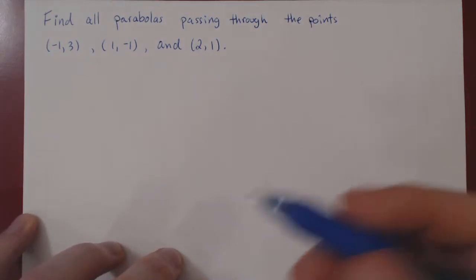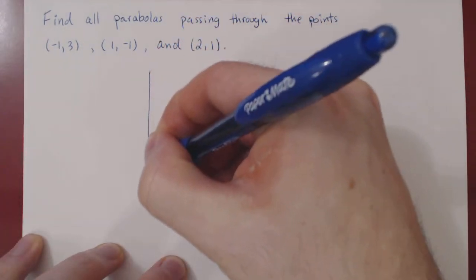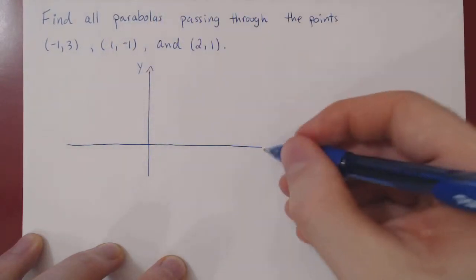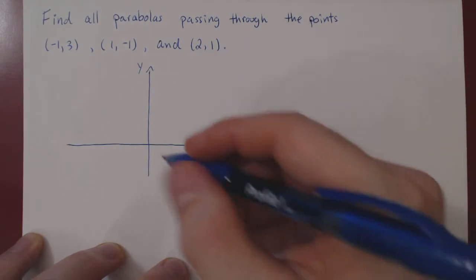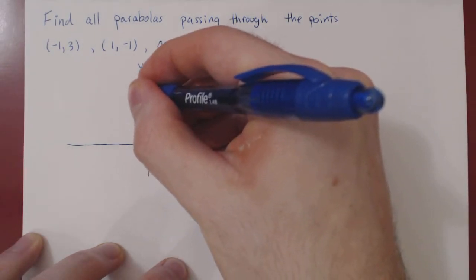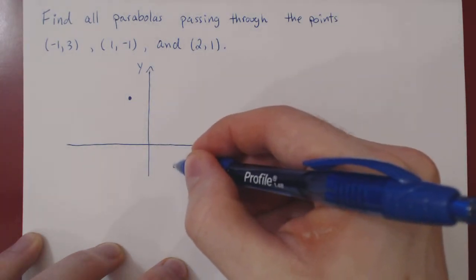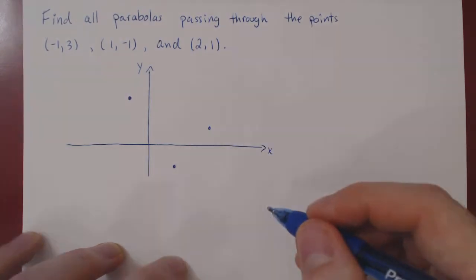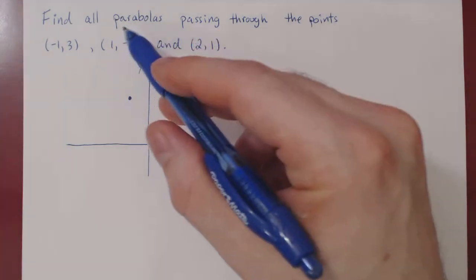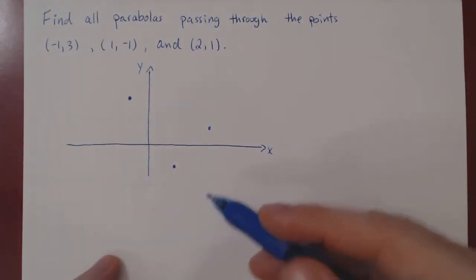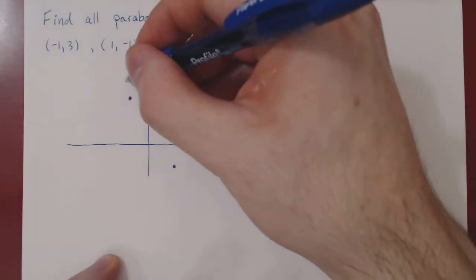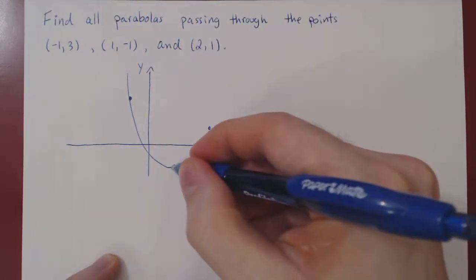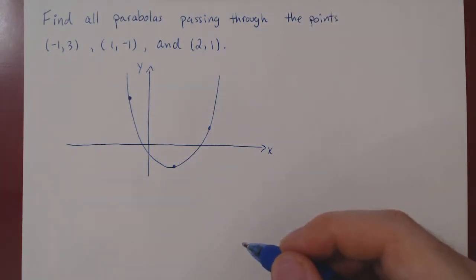So first, let's try and visualize what the question is asking for. Look at the Cartesian plane, and we're given three points. The first point, negative one, three. The second point, one, negative one. And the third point, two, positive one. So we have these three points, and we're looking for finding all parabolas passing through the points. So we can draw one of them that may look something like this. There may be others, we don't know,